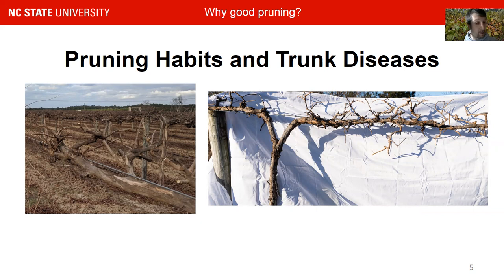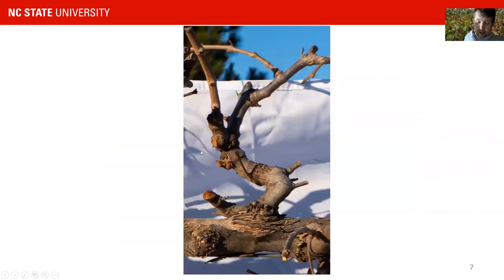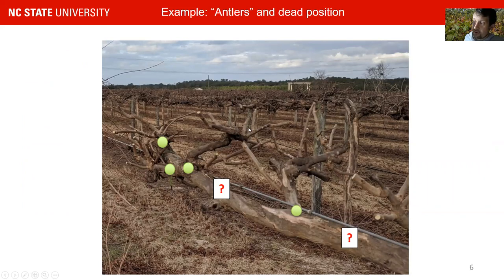I'll also show some examples of what is a better pruning and training technique, which ensures a little bit more longevity in your muscadine vineyard. The first thing I want to show are antlers. In this example, you see a cordon which has a lot of those long spur fruiting positions, which then have this kind of mushroom-forming fruiting wood at the top. There is a lot going on in this picture.